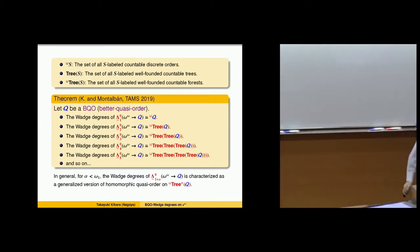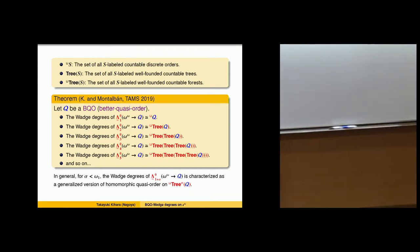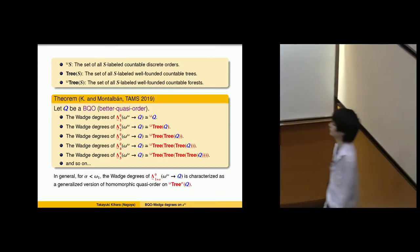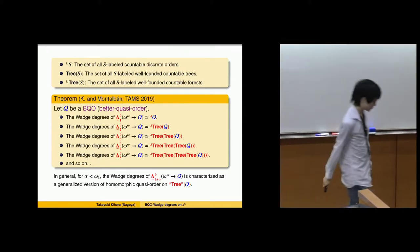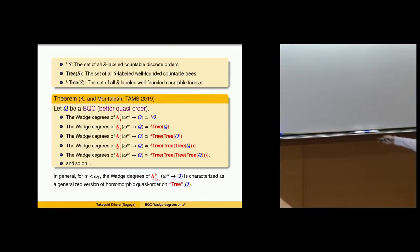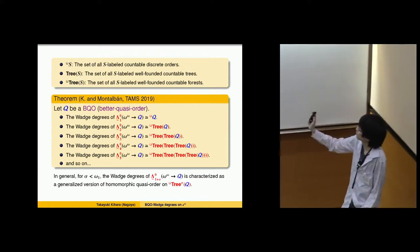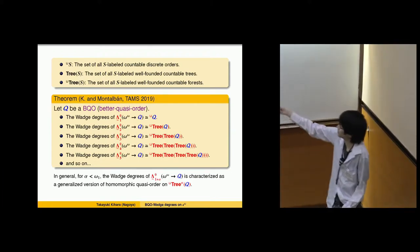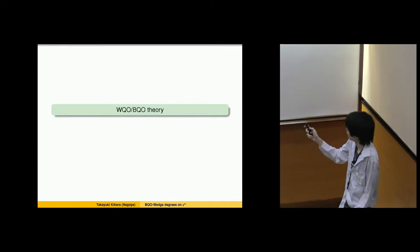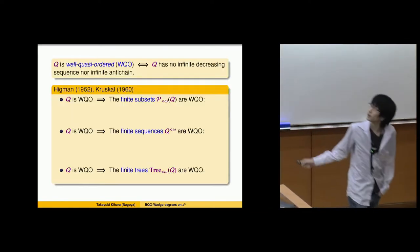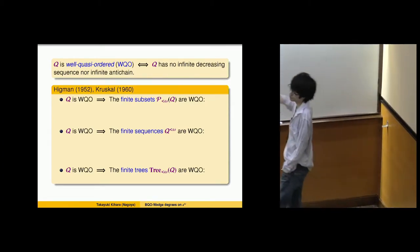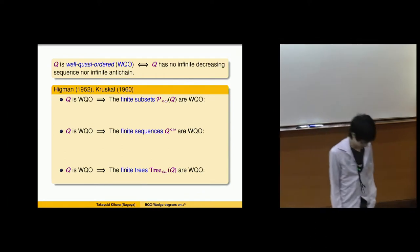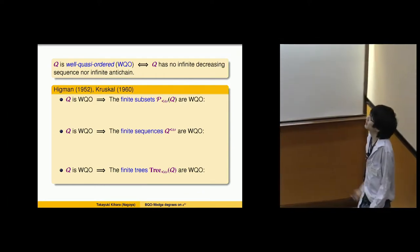I will give a short introduction to BQO theory. A well quasi-order (WQO) is a quasi-order with no infinite decreasing chain and no infinite anti-chain. This is the motivation for introducing BQO.